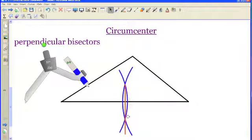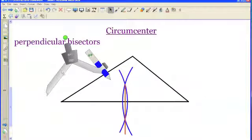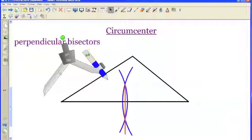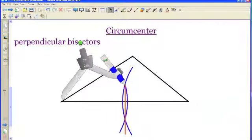So that orange line hits that side at a right angle, and it cuts it in half. And all I need to do then is that exact same construction two more times for the other two sides of the triangle.